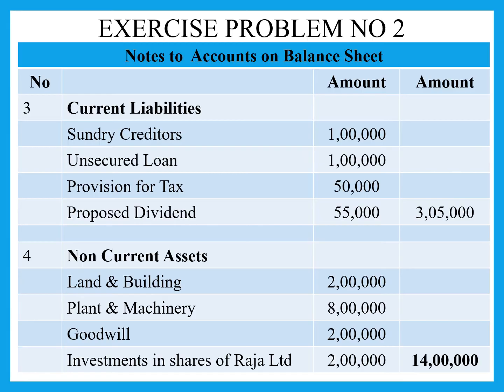Proposed dividend is 55,000 rupees. Dividend is something that has to be given to shareholders every year, so it is placed under current liabilities. Provision for tax also has to be paid within the current year, so it is also placed under current liabilities. The total current liabilities come to 3 lakh 5,000 rupees.